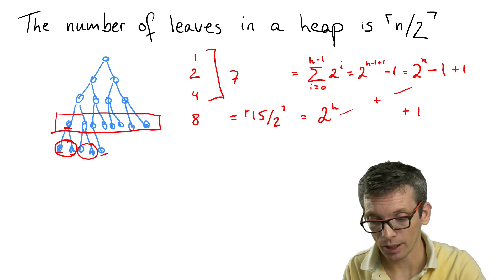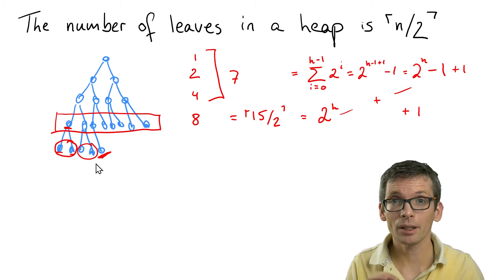Now, if the number of nodes in the last level is odd, like in our case, so then I have this one here, and that one I have to treat slightly differently.